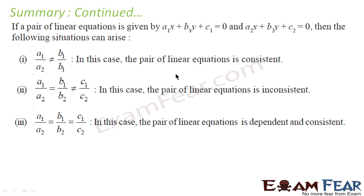Also, if there are two pair of lines a1x plus b1y plus c1 equals 0 and a2x plus b2y plus c2 equals 0, then if a1 by a2 is not equal to b1 by b2, then it has one solution, consistent. If a1 by a2 equals b1 by b2 but not equal to c1 by c2, then it is inconsistent, no solution. If a1 by a2 equals b1 by b2 equals c1 by c2, then both the lines are the same actually, and they are dependent and coincident, that means infinite solutions.